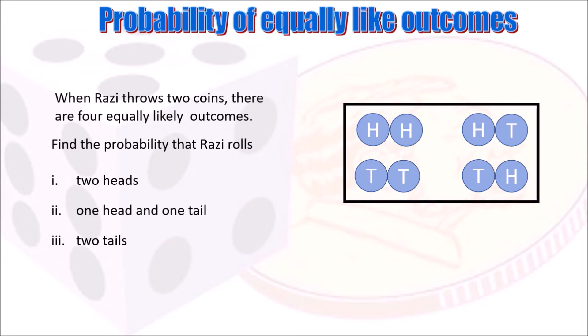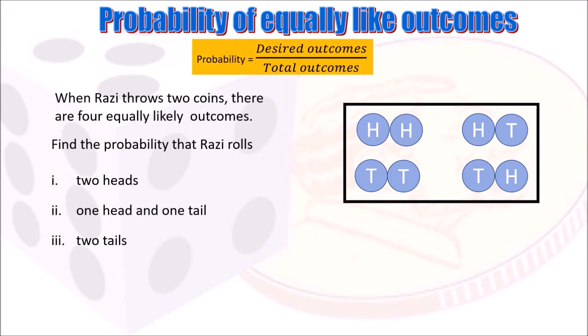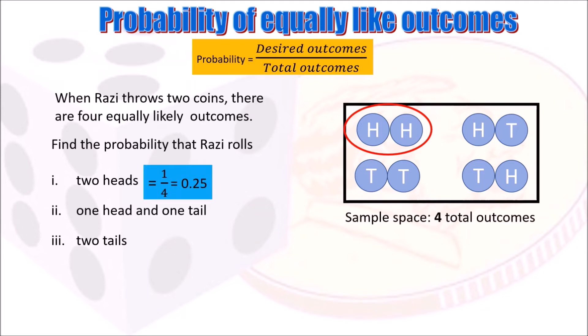Let's check your work. When Razzy throws two coins, there are four equally likely outcomes, as shown in the box: two heads, two tails, first coin head and second coin tail, or first coin tail and second coin head. The probability is desired outcomes divided by total outcomes — four total outcomes is our denominator. There is only one outcome that gives two heads, so the probability of two heads is 1 out of 4, or 0.25.